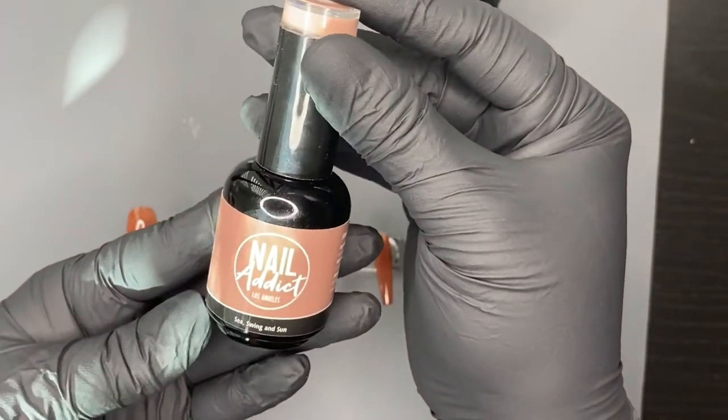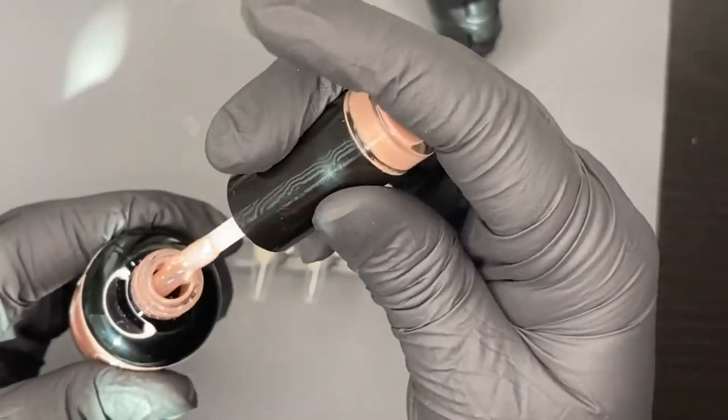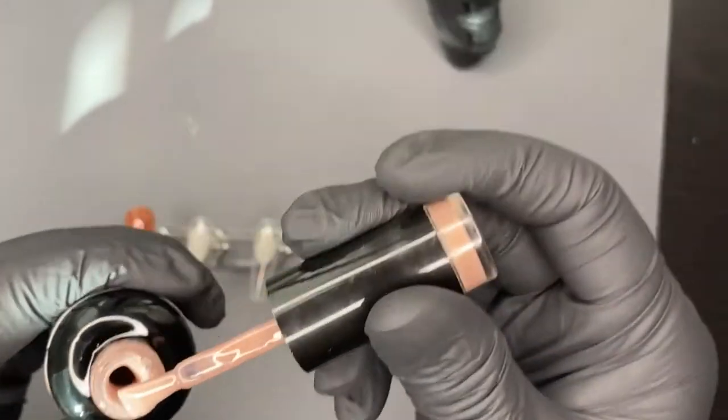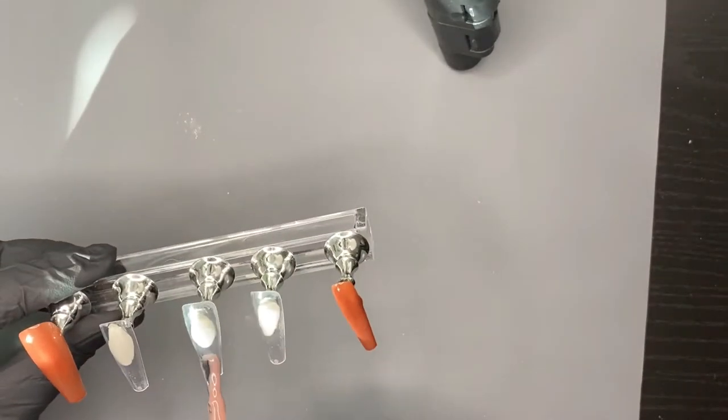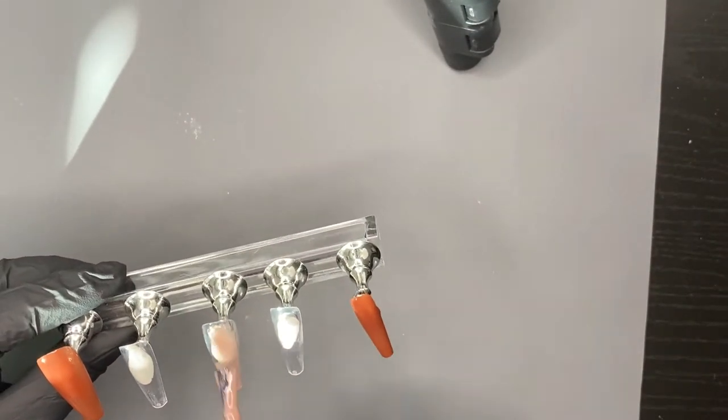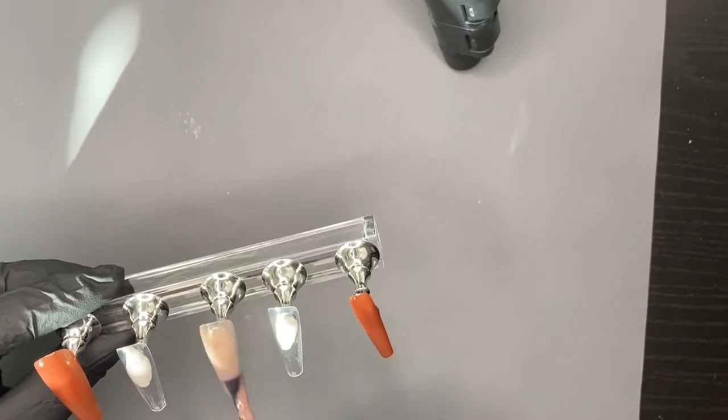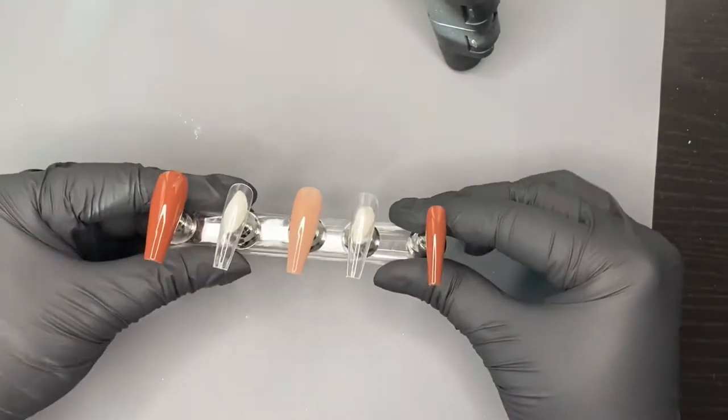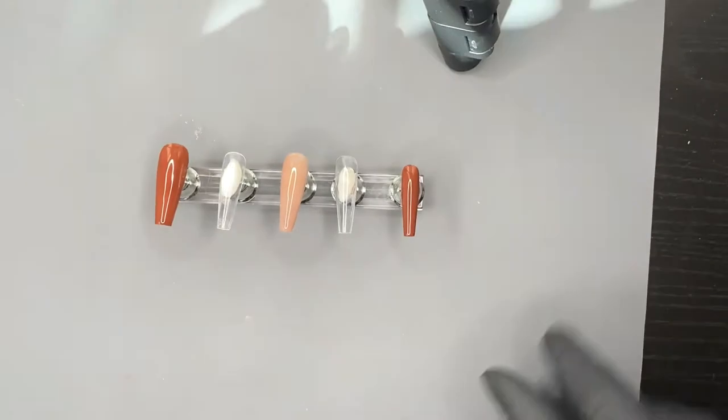Now we are with Nail Addict Sea Swing and it's a really great nude. This is actually one of my favorite nudes ever and we're just going to put that on the pinky nail. I wish Nail Addict made this particular polish a little more opaque—it's actually really sheer—and that's how it looks now after two coats.